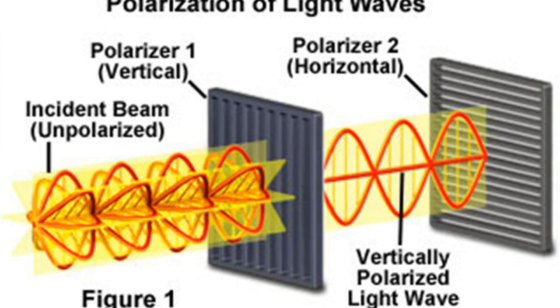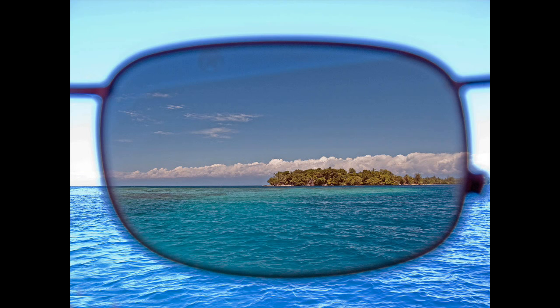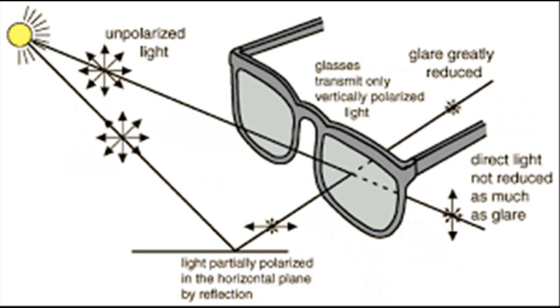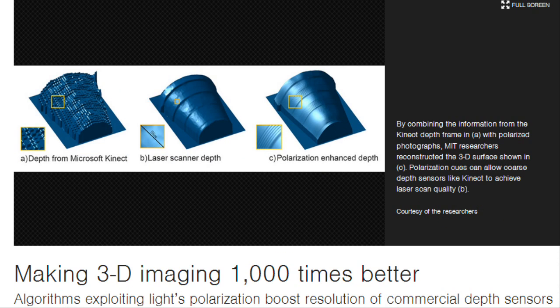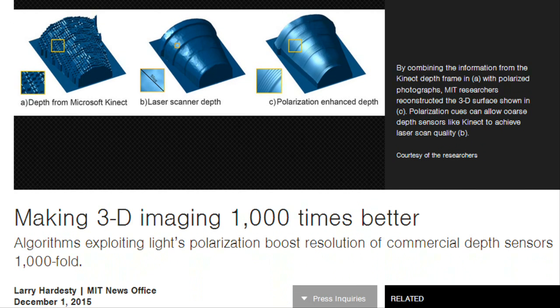The polarization of light is the physical phenomenon behind polarized sunglasses and most 3D movie systems. MIT researchers have shown that by exploiting the polarization of light, they can increase the resolution of conventional 3D imaging devices as much as 1,000 times.